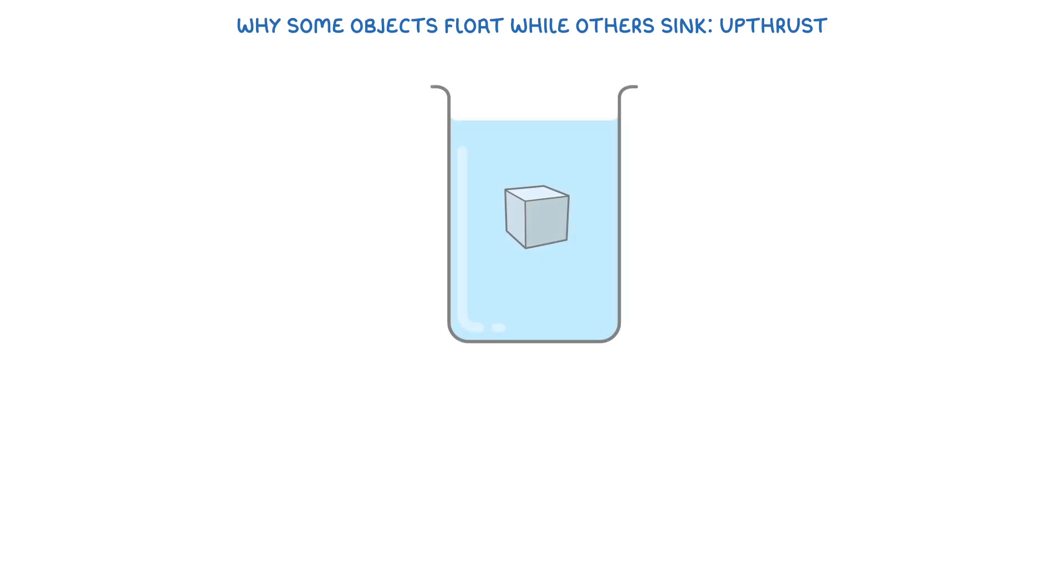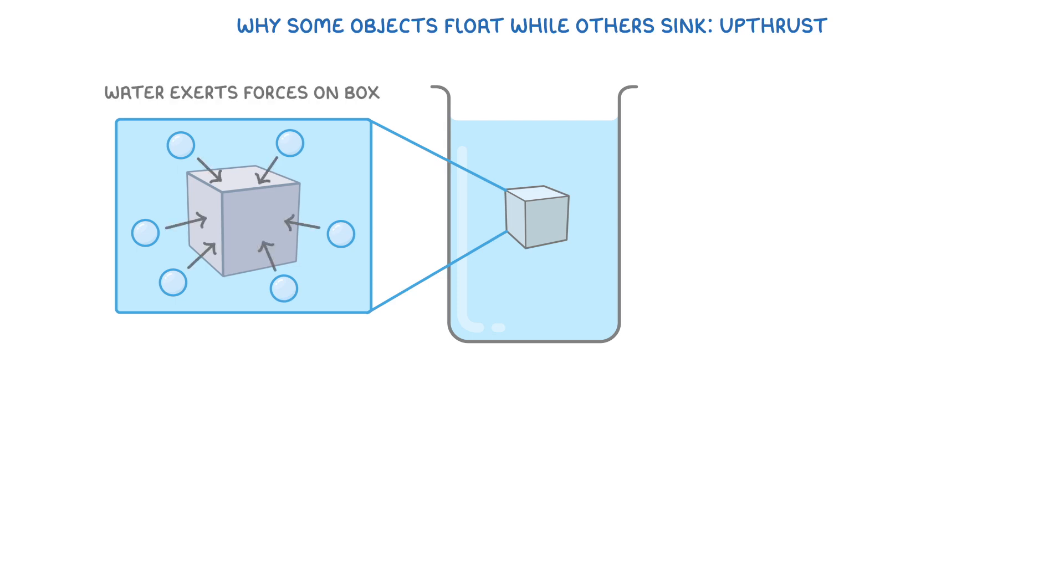Let's imagine that we have a box that's submerged in water. Due to the collisions of all the tiny water molecules around the box, the surrounding water will exert forces on the box from all directions. Because the bottom of the box is deeper than the top though, the box will experience a larger upwards force from the bottom than it will a downwards force from the top. This means that overall, there will be a resultant force upwards, which pushes the box up. And it's this upwards force that we refer to as the upthrust.